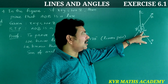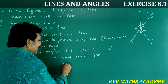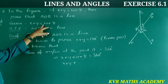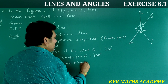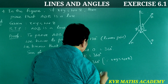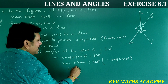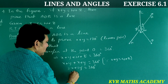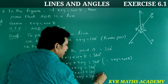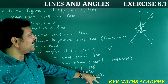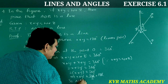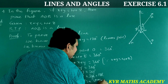Since x plus y equals w plus z (given), substitute w plus z with x plus y: x plus y plus x plus y equals 360 degrees, so 2(x plus y) equals 360 degrees, therefore x plus y equals 180 degrees. Hence AOB is a straight line. Hence proved.